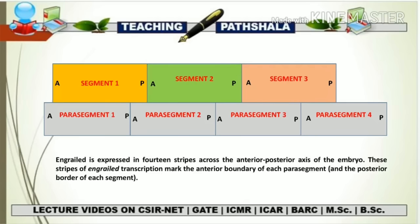With the help of this diagram we are going to understand the overall concept behind the polarity of segment and the parasegment. The first rectangle is going to show the segment — there will be more than three segments but for representation I have kept only three. One segment is going to have an anterior and a posterior polarity, and the same for the second and third segment. Anterior has been represented with the letter A and posterior with the letter P. Just below this segment you can see the representation of parasegments, which also have an anterior and posterior polarity. Now we are going to see how engrailed helps in deciding the polarity of a parasegment and a segment.